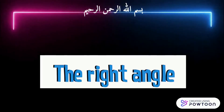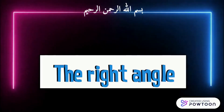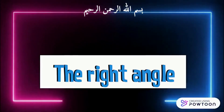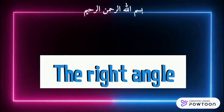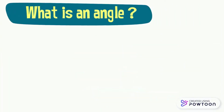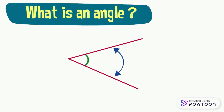In this video, we will learn how to verify and draw right angles. What is an angle? An angle is formed when two straight lines meet at a common point. An angle is the space between these two lines.